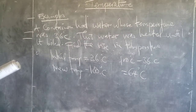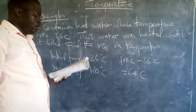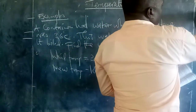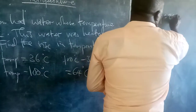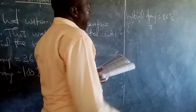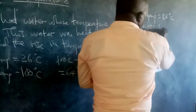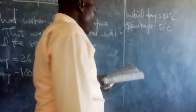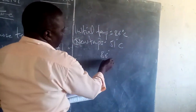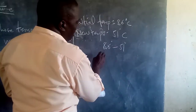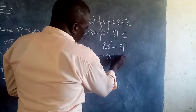Example two: the temperature of a metal rod was 86 degrees Celsius. It was then cooled by 51 degrees Celsius. What was the new reading of the thermometer? The initial temperature is 86 degrees Celsius, and after cooling, we subtract 51 degrees Celsius. So the reading on the thermometer is going to be 35 degrees Celsius.